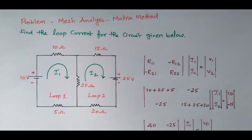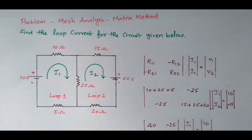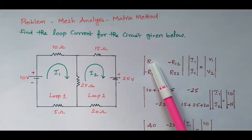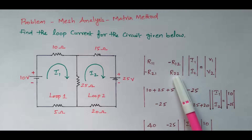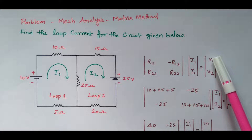Now we can frame the matrix. The matrix we are framing is V = IR — the voltage matrix, current matrix, and resistance matrix — because we are applying Kirchhoff's voltage law. So we follow the matrix equation V = I × R. The resistance matrix contains R11, R12, minus R12, minus R21, and R22, with two currents I1, I2 and two voltages V1 and V2.